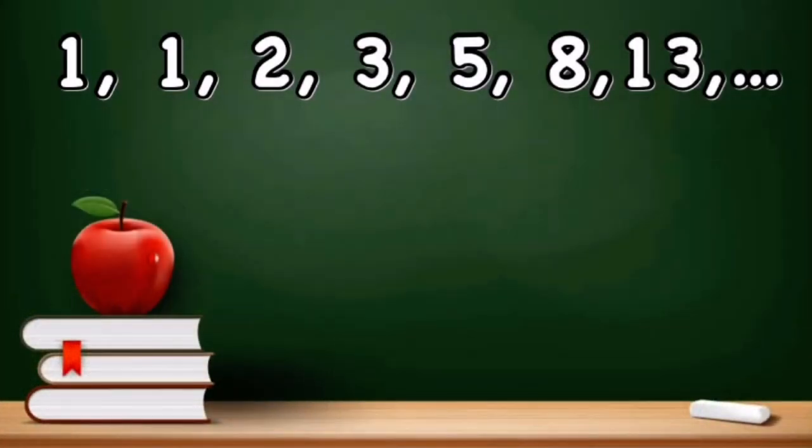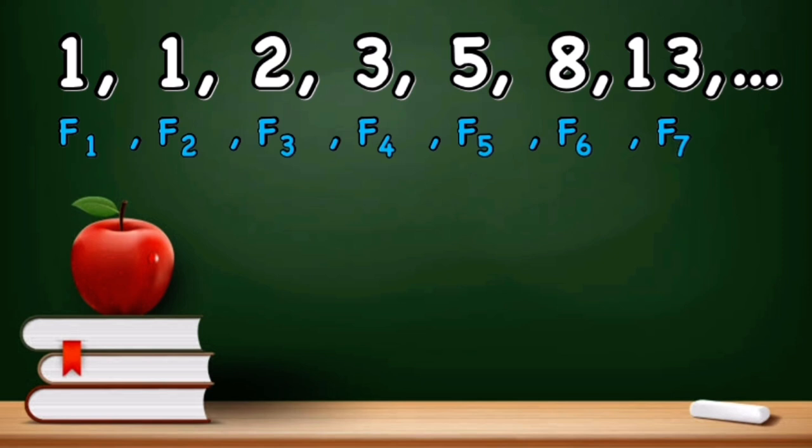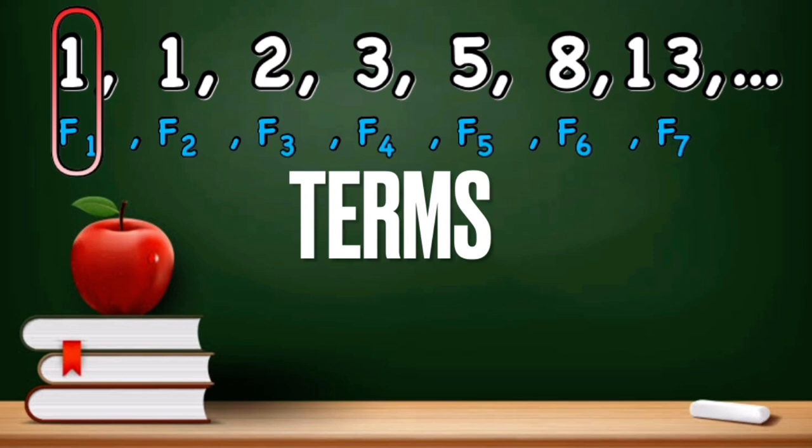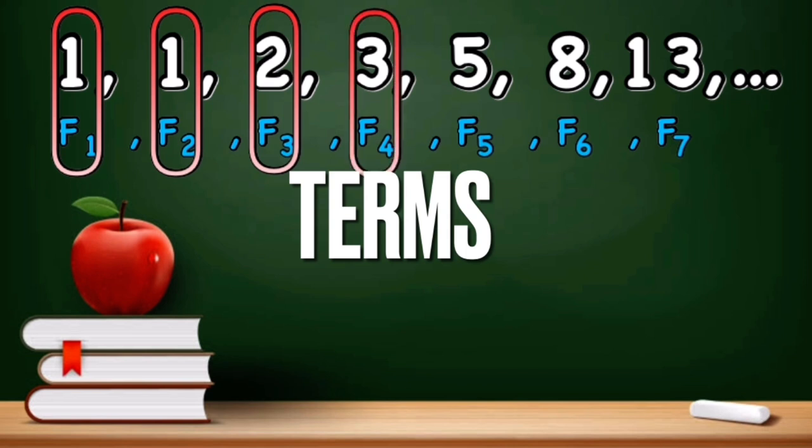The Fibonacci sequence is a wonderful series of numbers that could either start with zero or one. Now let us try to determine the next few terms. The first term, F of 1, is one. The second term, F of 2, is still the same, one. The third term, F of 3, is two. F of 4 is three, F of 5 is five, F of 6 is eight, F of 7 is 13, and so on.